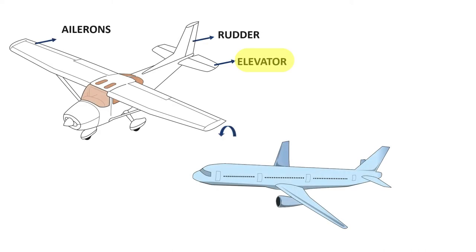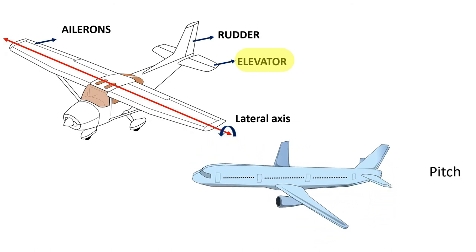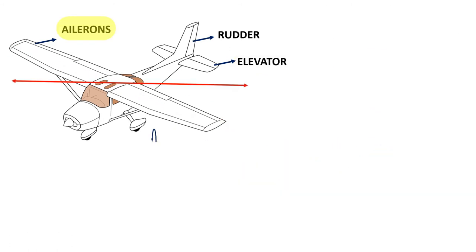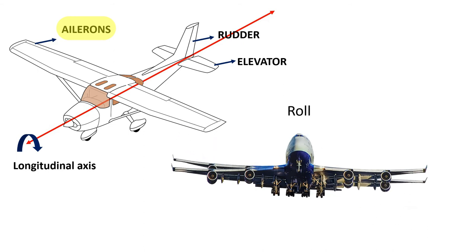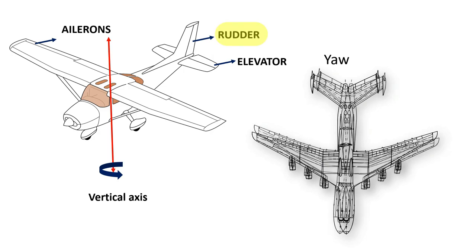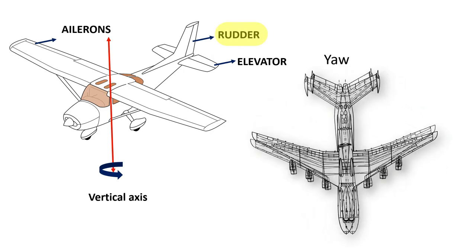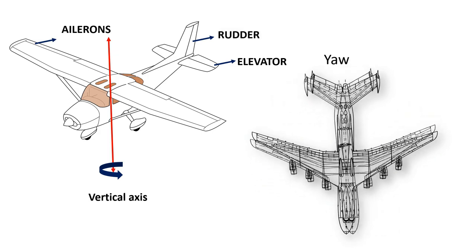The elevator, located at the trailing edge of the horizontal stabilizer, helps the aircraft to pitch along the lateral axis. The aileron, located at the trailing edge of the wing, helps the aircraft to roll along the longitudinal axis. The rudder, located at the trailing edge of the vertical stabilizer, helps the aircraft to yaw along the vertical axis.